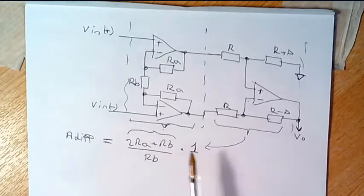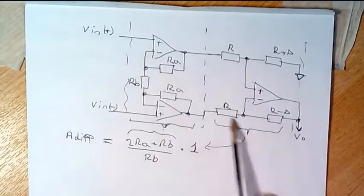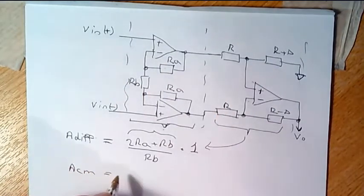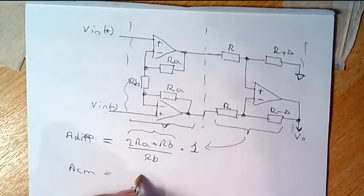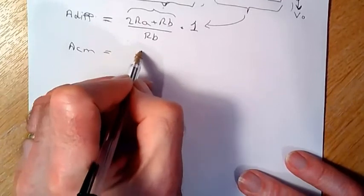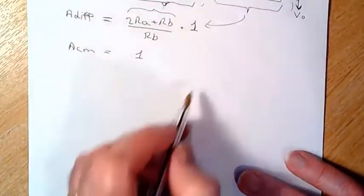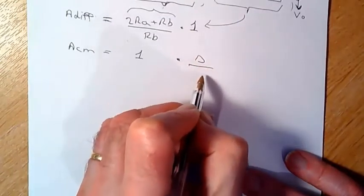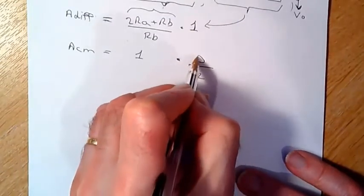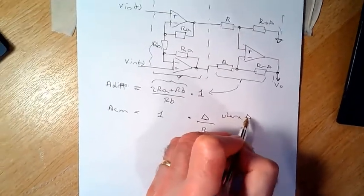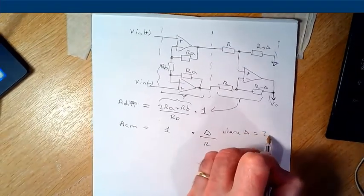And ACM equals 1, which is this part here from the input stage, times delta over r. For delta equals 2 times t.